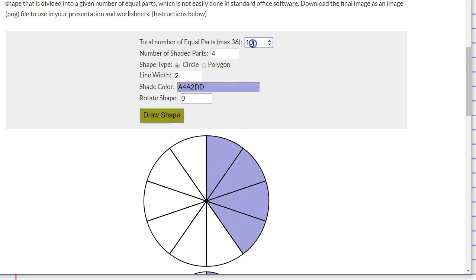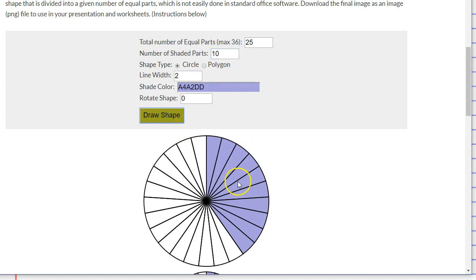The other one was 10/25. So we'll write that down. And you'll notice that the fraction, even though it'll have more pieces, it's still going to be the same amount shaded. There we go.